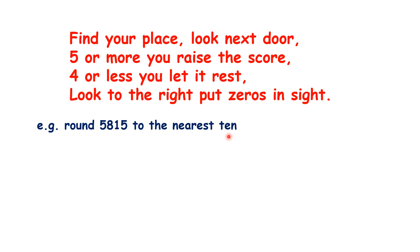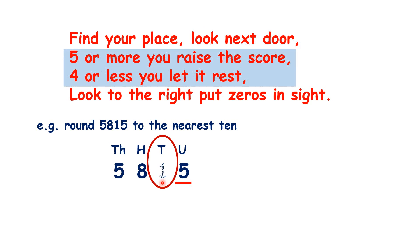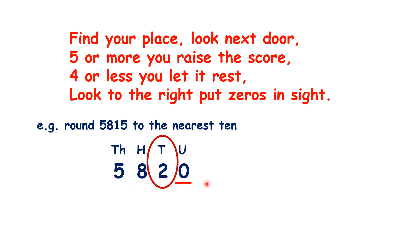Now what about to the nearest ten? We find our place and we can see that we have a five next door in our units place, so we raise the score — so that one becomes a two — and then change our only digit to the right to a zero, so to the nearest ten we have 5,820.